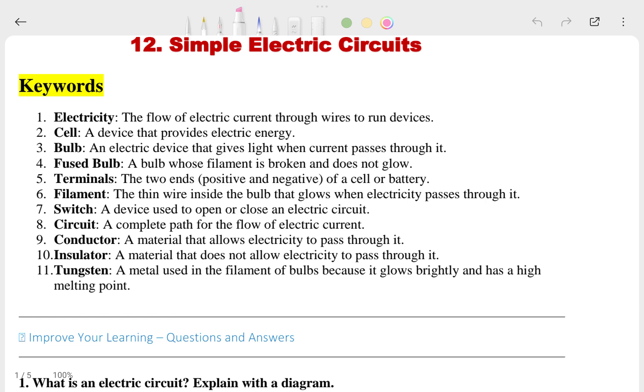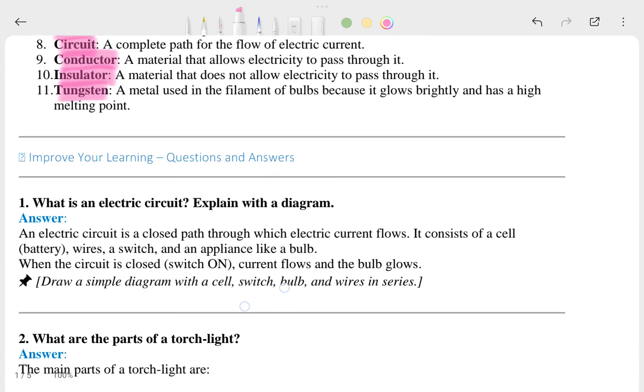First, keywords like electricity, cell, bulb, fused bulb, terminals, filament, switch, circuit, conductor, insulator, tungsten. Generally these are the keywords. I hope this keyword is going to be clear to you.